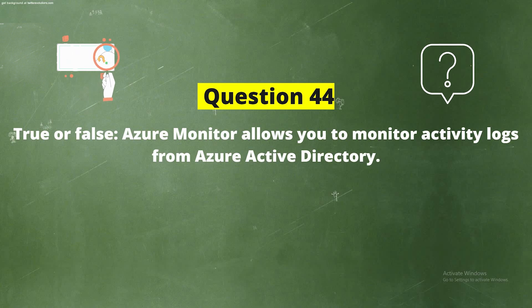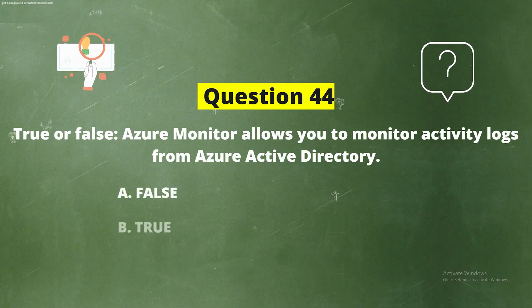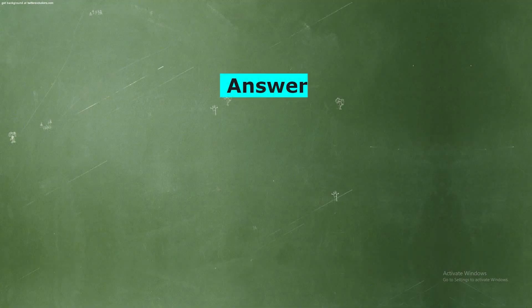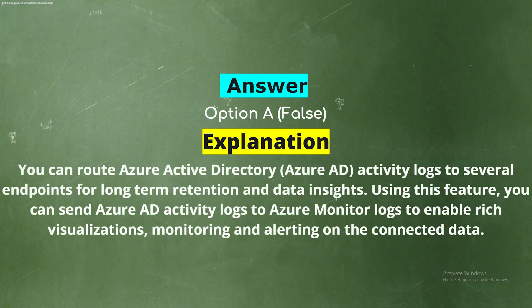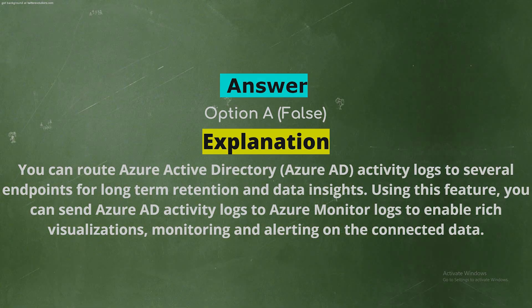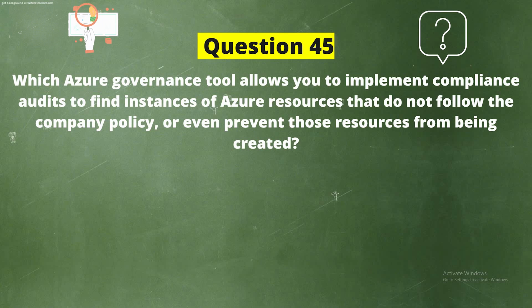Question 44: True or false — Azure Monitor allows you to monitor activity logs from Azure Active Directory. Options: Option A, False; Option B, True. The correct answer is Option A, False. Explanation: You can route Azure Active Directory activity logs to several endpoints for long-term retention and data insights. Using this feature, you can send Azure AD activity logs to Azure Monitor Logs to enable rich visualization, monitoring, and alerting on the connected data.